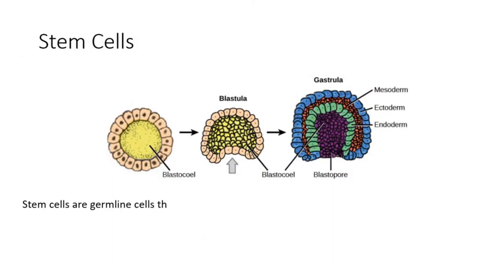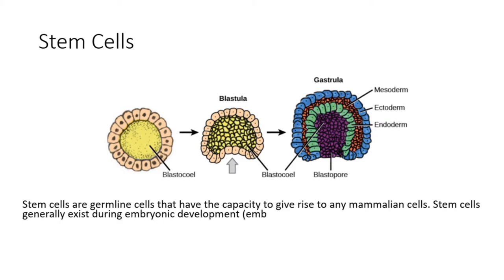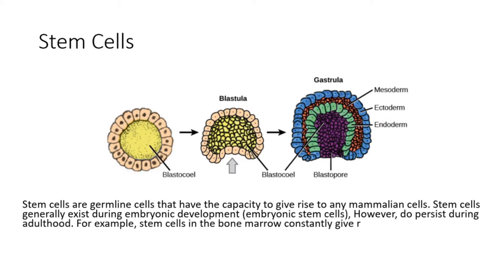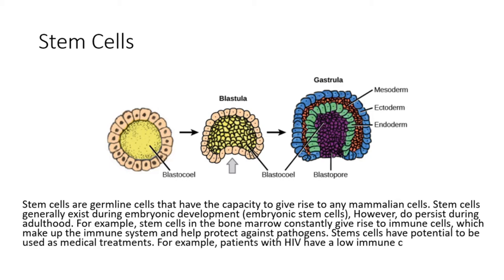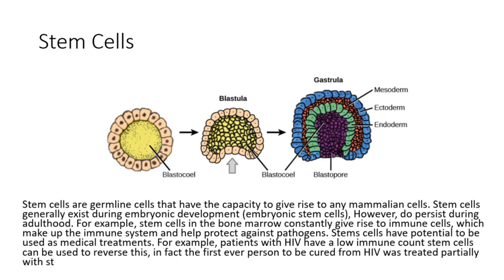Stem cells are germline cells that have the capacity to give rise to any mammalian cells. Stem cells generally exist during embryonic development as embryonic stem cells; however, they do persist during adulthood. For example, stem cells in the bone marrow constantly give rise to immune cells, which make up the immune system and help protect against pathogens.